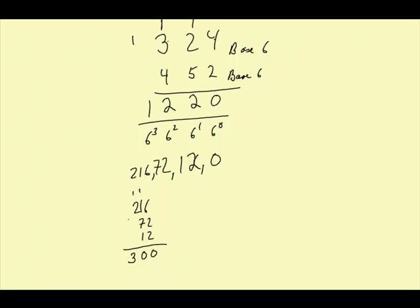Now, is our answer correct? Well, let's take a look. We had for 324, we have 4 ones, we have 2 sixes, which is 12, and we have 3 thirty-sixes, which is 108. Now, if we add those up,